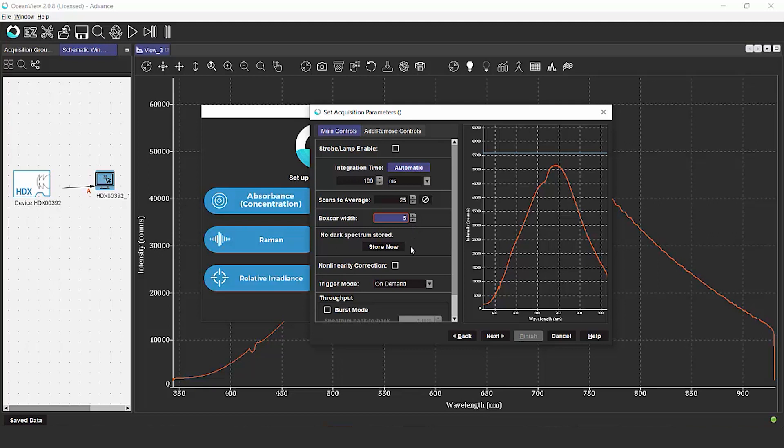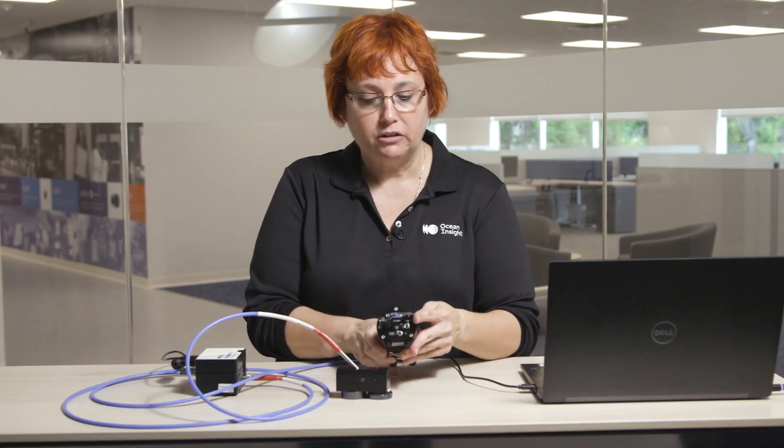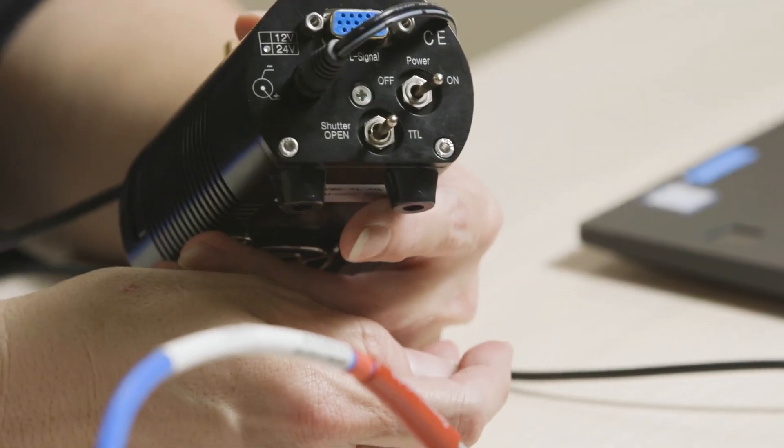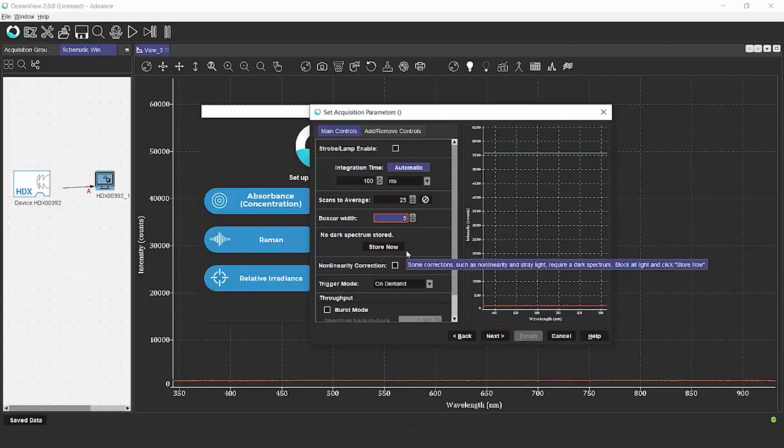The next step that the wizard will ask you to do is to store dark spectrum. We're going to close the shutter on our light source, so no light is getting into the spectrometer.